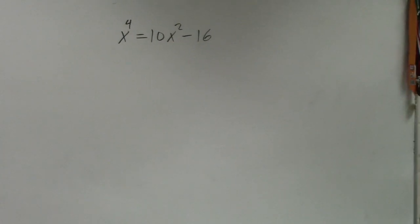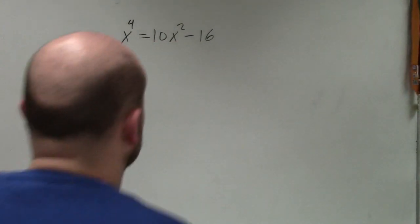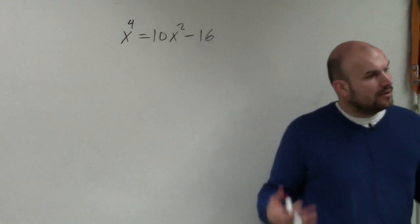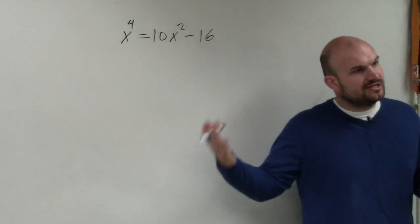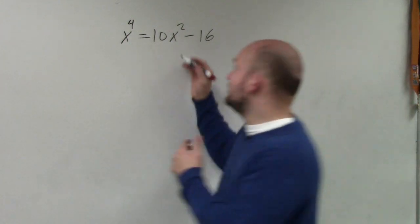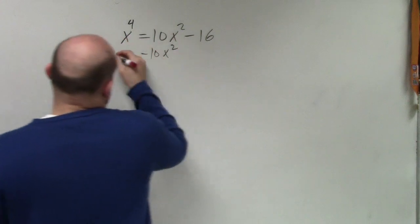What we've talked about in this class when doing problems like this is making sure we set the problem equal to 0. Unfortunately, we don't have our equation equal to y or equal to f(x), so we need to set it equal to 0. To do that, we need to get all of our terms to the same side.